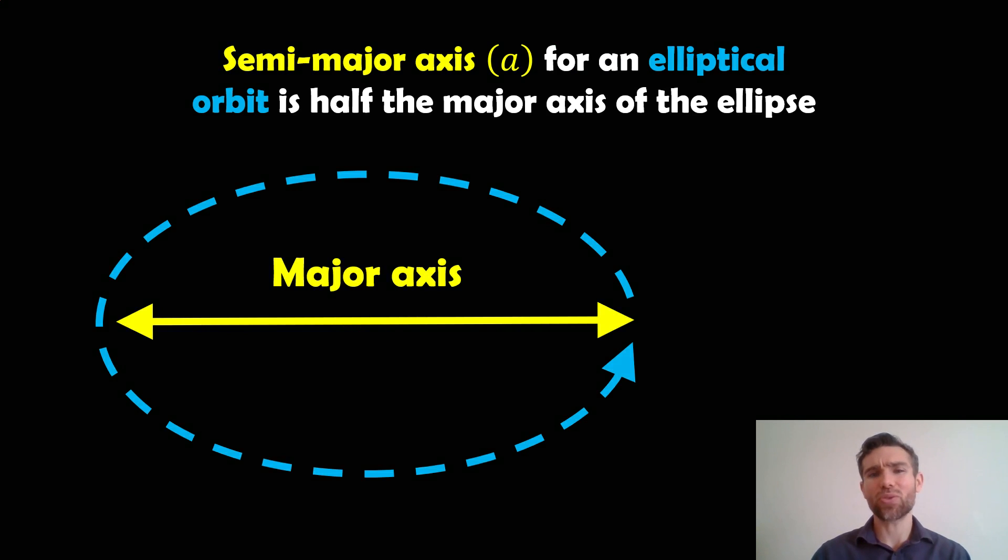Now in reality orbits are not circular, they have some ellipticalness to them, so they have some eccentricity. So if you have an elliptical orbit, then the shape of that is like an ellipse, like this here.